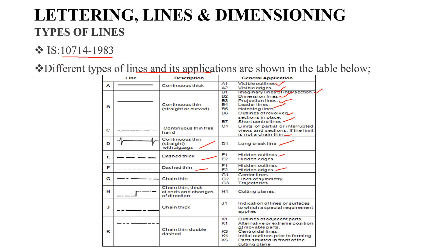We use chain thin lines for lines of symmetry and center lines. We also use chain thin lines with thick cut ends for changes of direction, and for cutting planes.